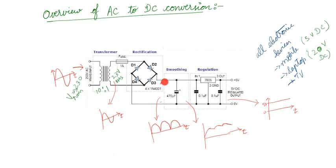Then we will have a smoothing circuit — another name for a smoothing circuit is a filter. The output here is pulsating; it is always on the positive side. So I need the output to be a constant one. What I am doing is adding a filter — there are many types like inductor filter, capacitor filter, pi-type filter, T-type filter. But here I am using only a simple capacitor. Based on the capacitor charging and discharging, I can control the waveform.